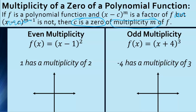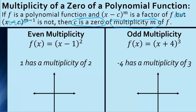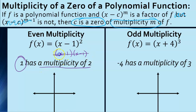So what does that mean? Let's look at this example. We have x minus 1 being squared. Think about what it means to square something — we multiply it times itself that many times. So this is the same as x minus 1 times x minus 1. That means we would have two zeros of the same thing. If we set each of those factors equal to zero, we get a zero of 1 — we'd have two of them. So we say that we have a multiplicity of two.